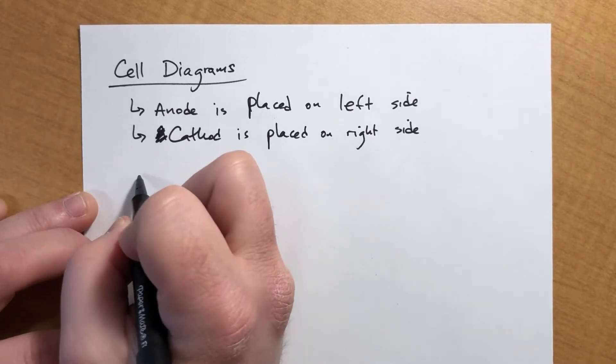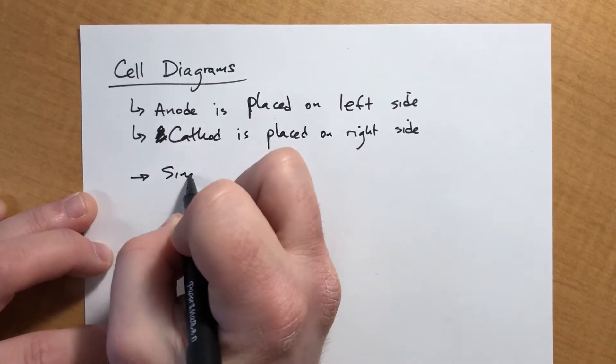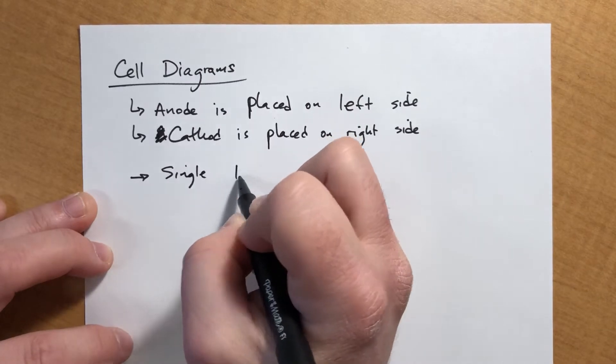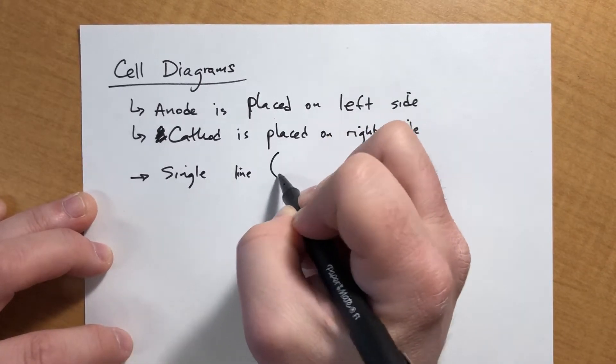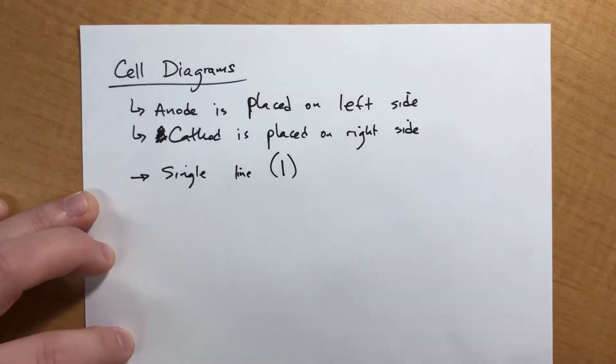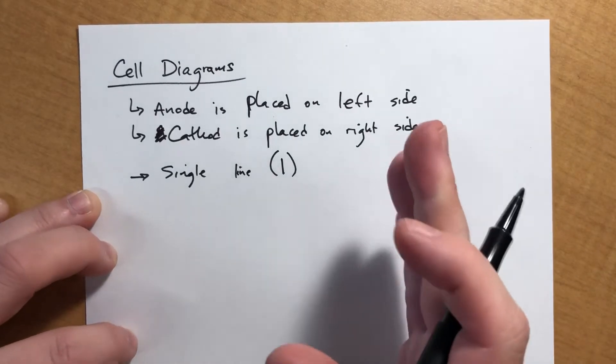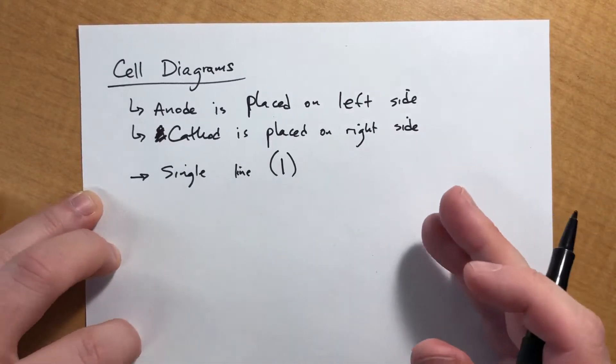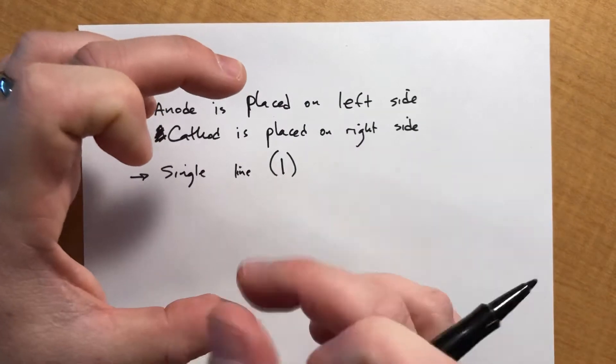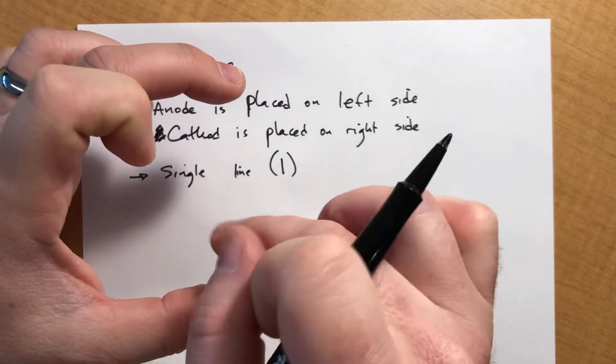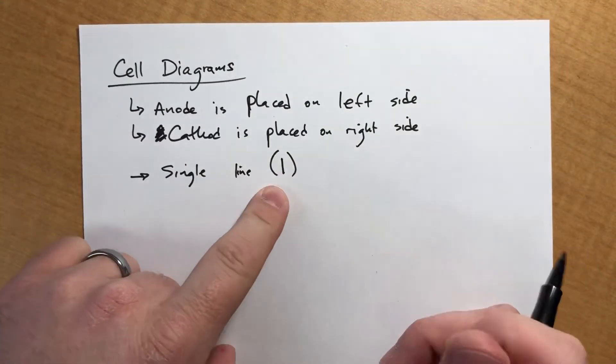We use a single line, a single vertical line, to represent the boundary between the electrode and the solution. So we had an electrode, and it was sitting in the solution. The difference between those is represented by a single line.